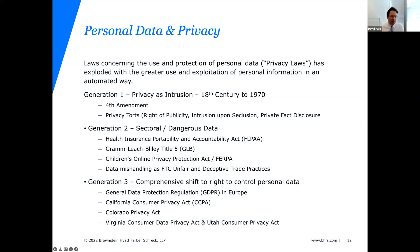Privacy torts remained the mainstay until the mid-20th century, when large amounts of data aggregation emerged and suddenly there was information about you in different places. The second generation of privacy laws really swung in during the 1990s with a sectoral approach — protecting particular sectors of the economy or what you might call dangerous data. This includes HIPAA, the Health Insurance Portability and Accountability Act, which created a whole set of rules for healthcare information — nobody really wants even innocuous health information made public.